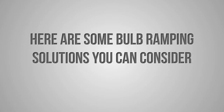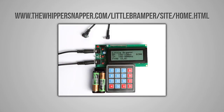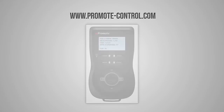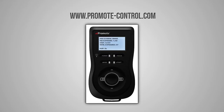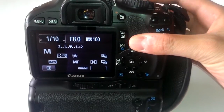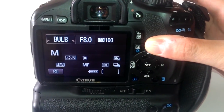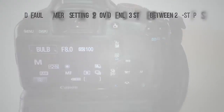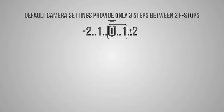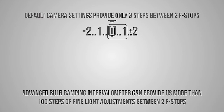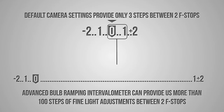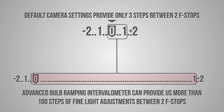The third way to create a Holy Grail timelapse is using a technique called bulb ramping, also known as brumping. An external complex intervalometer device is used to achieve this result. You put your camera in Bulb mode and the intervalometer overrides your settings with the values you dial on it. It can make more than a hundred steps of light adjustment between two f-stops, compared to the three steps built into your camera between each f-stop.